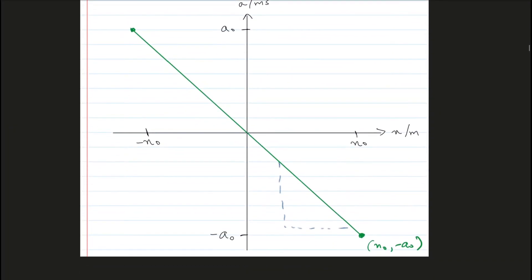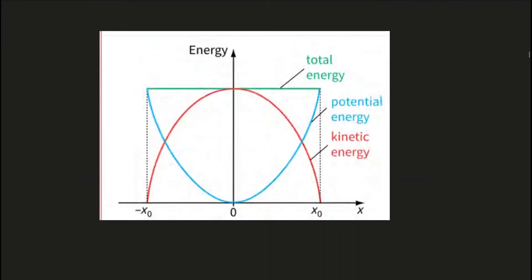This is the graph between acceleration and displacement in simple harmonic motion. It basically proves whether some motion is simple harmonic or not. It is a straight line graph passing through the origin, showing that acceleration is proportional to displacement. Another important feature is the negative gradient of the graph — the negative gradient shows that acceleration and displacement are in opposite directions to each other.